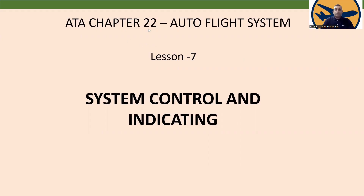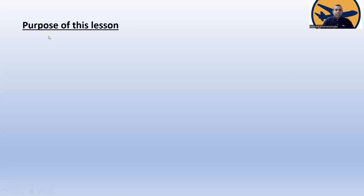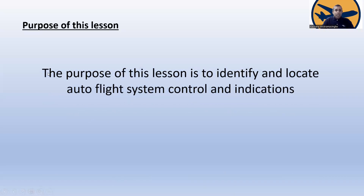This is ATA chapter 22 Autopilot System, lesson number seven. Today I'm going to discuss about system control and indication. The purpose of this lesson is to identify and locate auto flight system controls and indications.